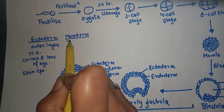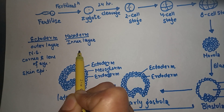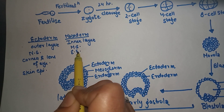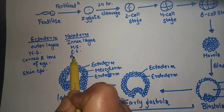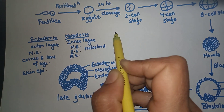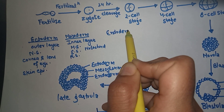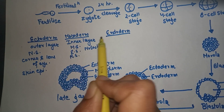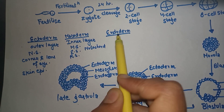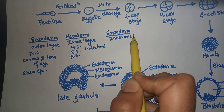Mesoderm develops most of the systems in our body. As its name indicates it is the middle layer, and it develops systems such as the muscular system, excretory system, respiratory system, and notochord.